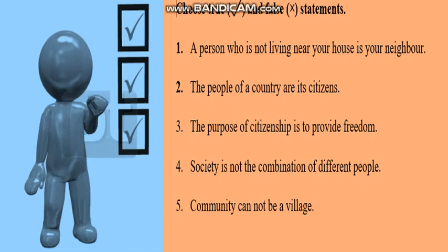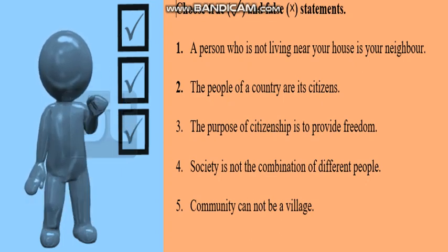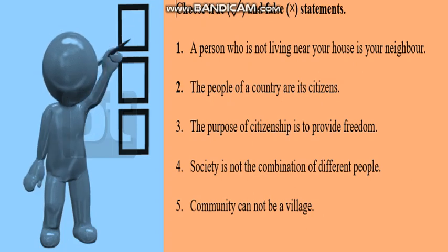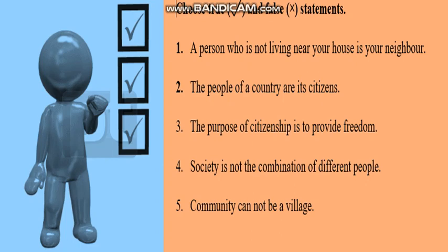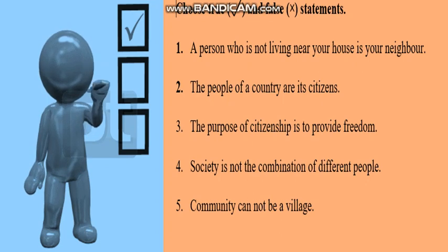Now choose true and false statements. A person who is not living near your house is your neighbor. The people of our country are its citizens. The purpose of citizenship is to provide freedom. Society is not the combination of different persons. Community cannot be a village.